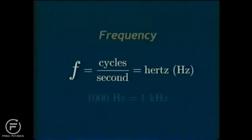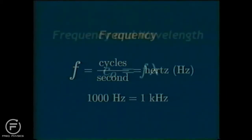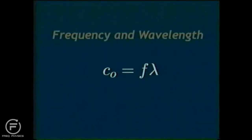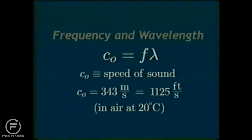When the number of hertz exceeds one thousand, it's common to write the amount in units of kilohertz. For example, one thousand hertz equals one kilohertz. Frequency is inversely proportional to wavelength. An equation relating the two parameters is C naught equals F lambda. C naught is the speed of sound in the medium. In air, at a temperature of 20 degrees Celsius, the speed of sound is 343 meters per second. This equation implies that longer wavelengths are associated with lower frequencies, and shorter wavelengths are associated with higher frequencies.